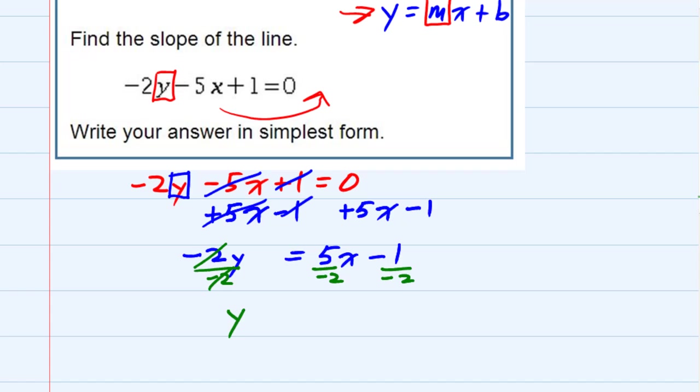And I now have y equals, well let's see, that would be a negative 5 over 2x, and the negative 1 divided by the negative 2 would give me a positive 1 over 2.